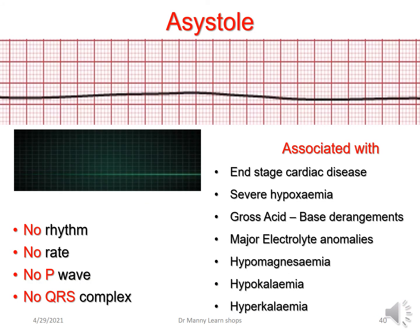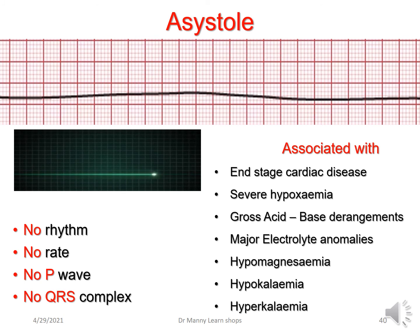Asystole isn't really a ventricular rhythm, but it's included here. Asystole basically means nothing — 'a' means without systole, so there's no contraction and no cardiac output. Remember, the mechanical cardiac cycle is systole and diastole; systole means to contract or empty the heart. There's no rhythm, no rate, no P-wave, no QRS complex, and no cardiac output. This is associated with end-stage cardiac disease, severe hypoxemia, gross acid-base derangements, major electrolyte anomalies — hypomagnesemia, hypokalemia, hyperkalemia — and end-stage situations.